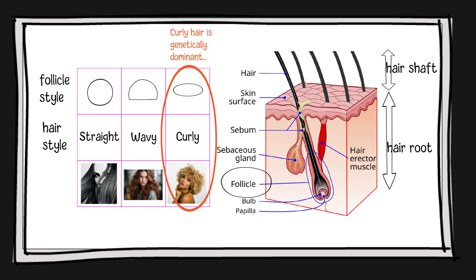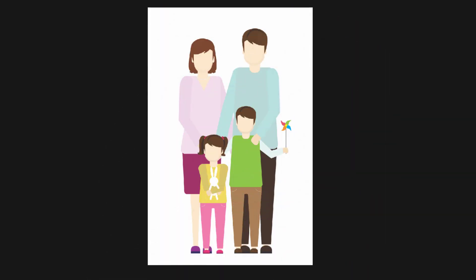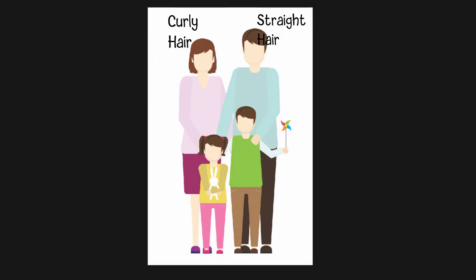This means that if one or both of your parents have curly hair, you are likely to inherit it. One interesting fact is that, although the curly gene takes precedence and manifests itself in the offspring, in certain situations, when there are variations in the strength and type of these genes, your hair can fall somewhere in between.